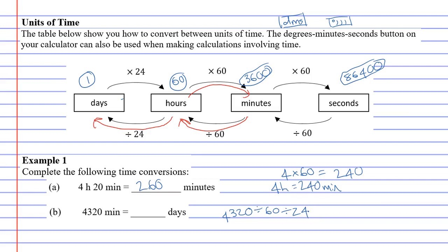4320 divided by 60, divided by 24, gives me 3. So that's the equivalent of 3 days. And that concludes our lesson.